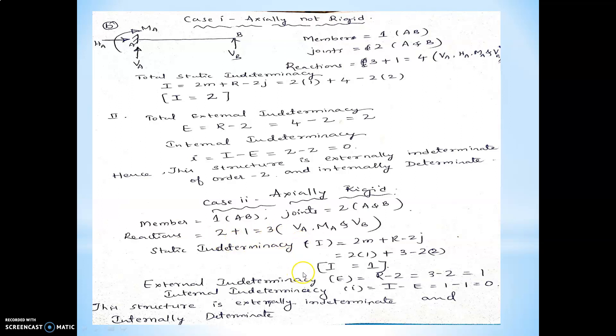Case 2: assuming the cantilever beam is axially rigid. We ignore the horizontal reaction Ha. The total number of reactions becomes three (two plus one, i.e., Vb, Va, and Ma). Substituting in the equations, total static indeterminacy becomes 1 and external indeterminacy is also 1. Hence, when assuming axially rigid, the structure is externally indeterminate of order 1 and internally determinate.